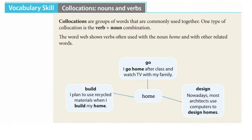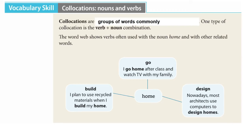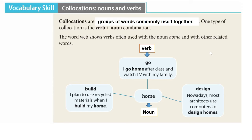So what is a collocation? Well, collocations are groups of words commonly used together. An example of this is shown in your skill box here, where we have 'go', which is a verb, and it usually goes with 'home'. So we have the noun collocation with the verb — home with go.